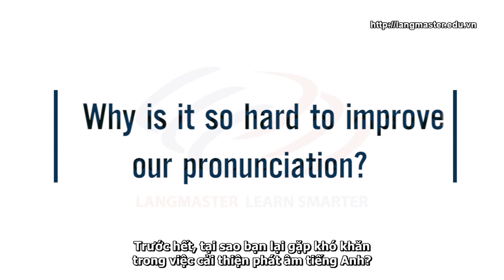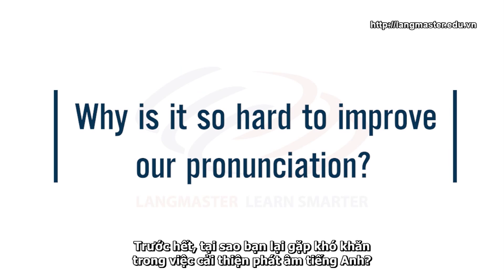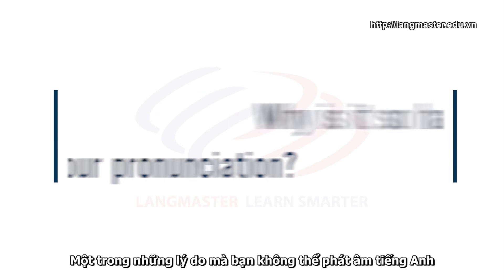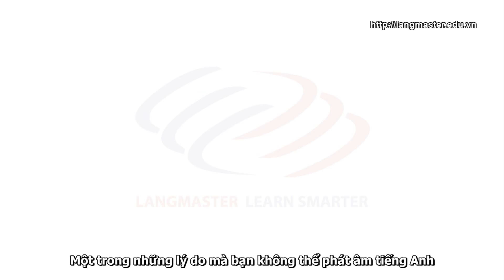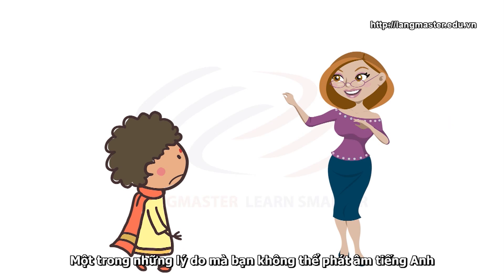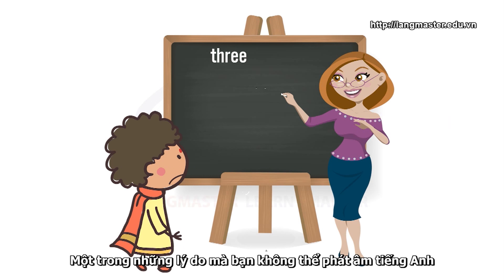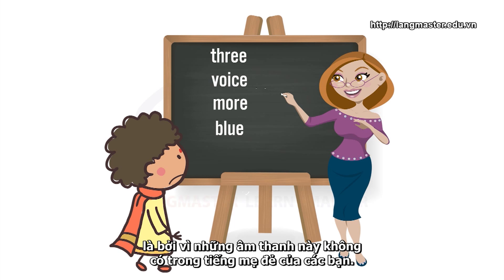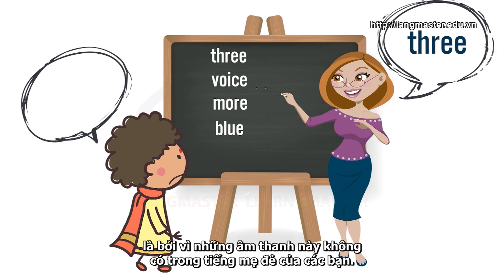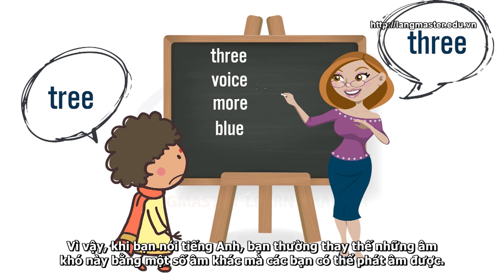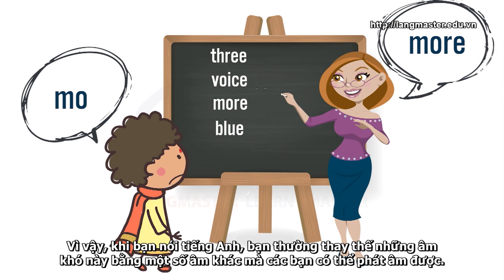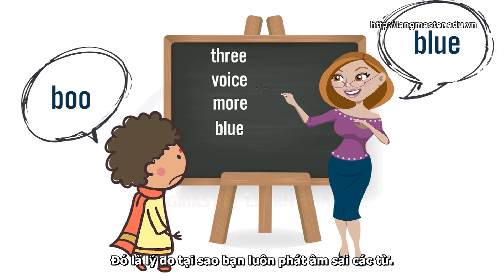First of all, why is it so hard for you to improve your English pronunciation? Well, one of the reasons is that you can't make some sounds in English because those sounds are not present in your native language. So when you speak English, you often replace those difficult sounds with some other sounds that you can make. That's why you mispronounce words all the time.